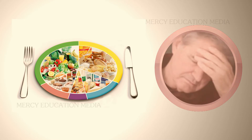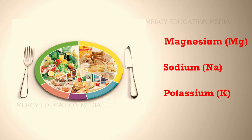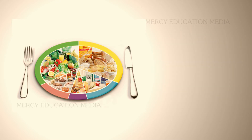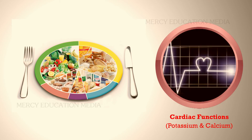Neuromuscular irritability requires the presence of magnesium, sodium, and potassium. Blood clotting depends on the presence of calcium, and cardiac functions depend on the presence of potassium and calcium.